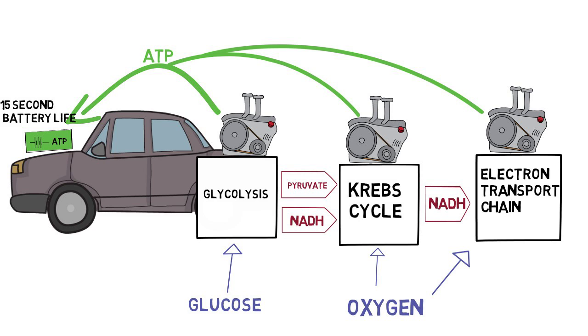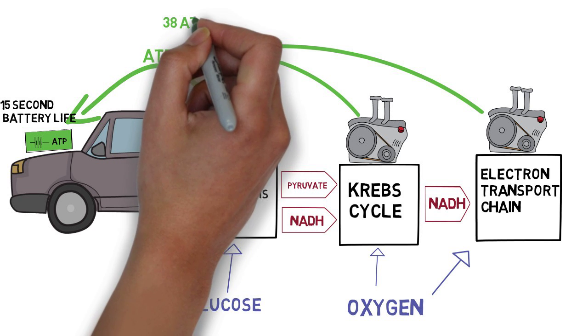Then the third element, the electron transport chain, with the help of oxygen is able to turn all of these NADHs into even more ATP, such that one very efficient cell in the third step can create 34 ATPs.